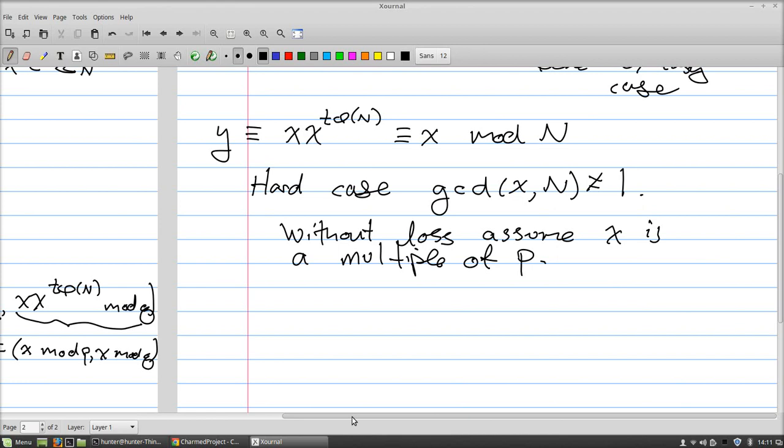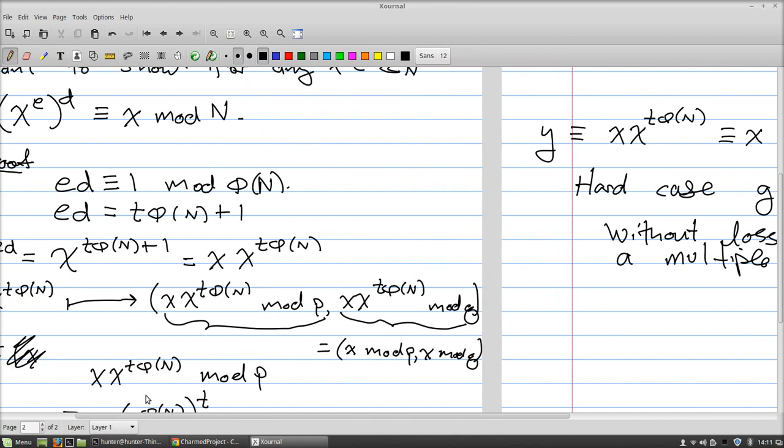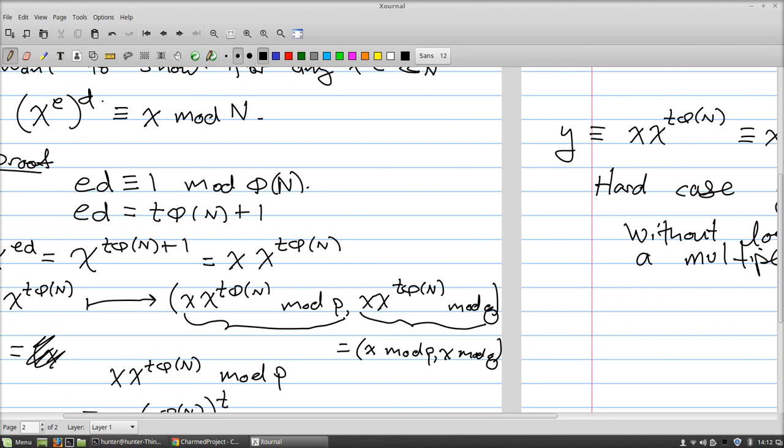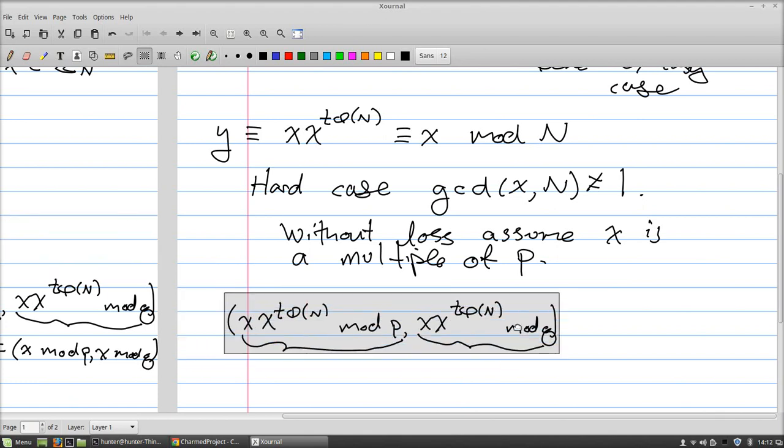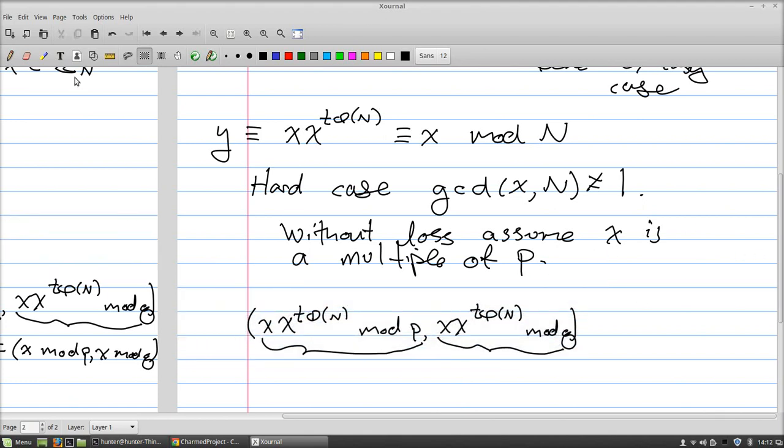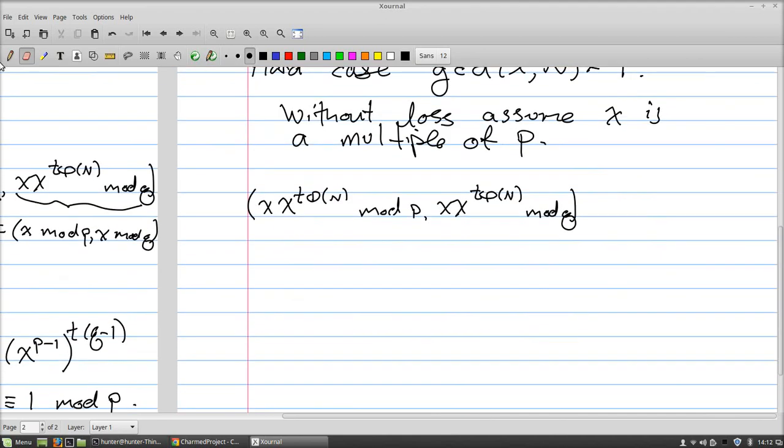Let's come back over to the situation that we were just describing. We are here, and now what does this simplify to? Now x is a multiple of p, so this is 0 mod p, but everything that we said about what happened mod q still happens, so this is (0, x) in Z_p cross Z_q.